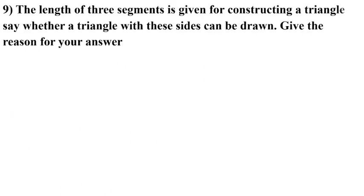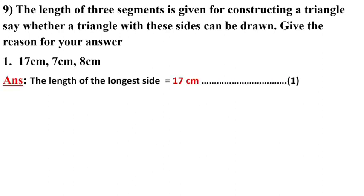The length of the three segments is given for constructing a triangle. Say whether a triangle with these sides can be drawn. Give the reason for your answer. Here we have to find out only that with the given measurement we can draw the triangle or not. Here we have not to draw the triangle. The first one is given 17cm, 7cm, and 8cm. The length of the longest side is 17cm.